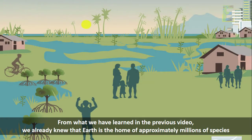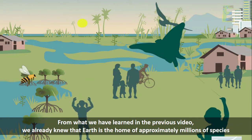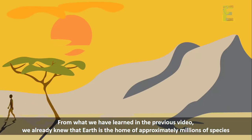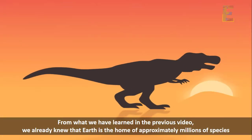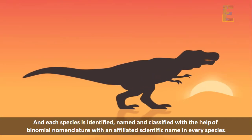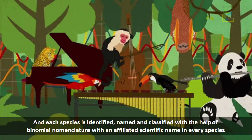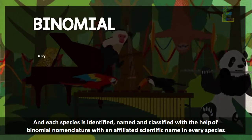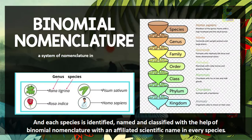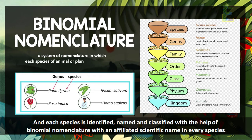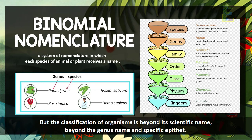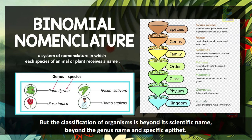From what we have learned in the previous video, we already knew that Earth is the home of approximately millions of species. Each species is identified, named, and classified with the help of binomial nomenclature with an affiliated scientific name. But the classification of organisms is beyond its scientific name, beyond the genus name and specific epithet.